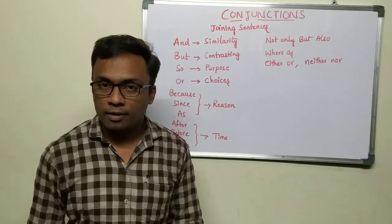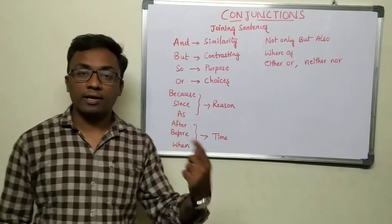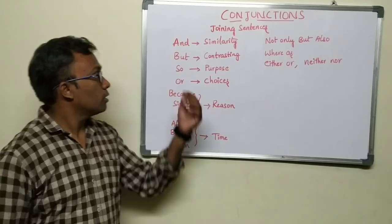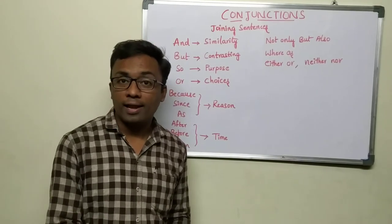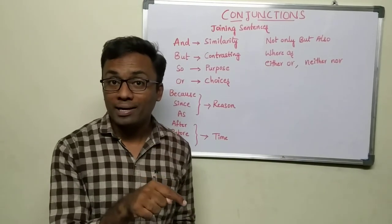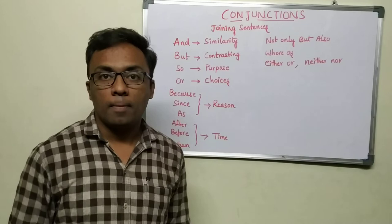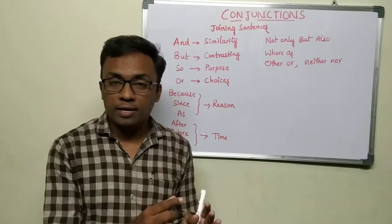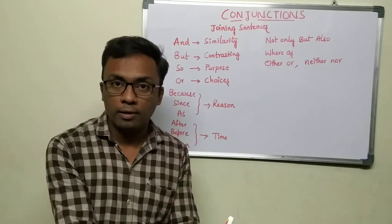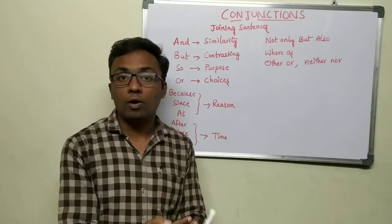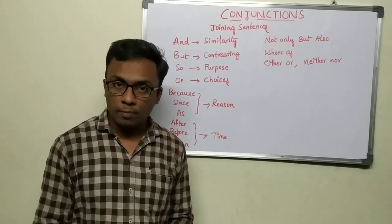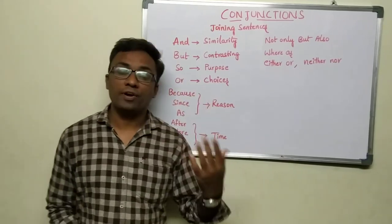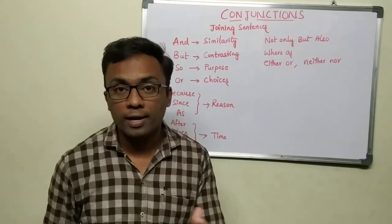'But' is contrasting. 'I like this dress but it is costly' - in one sentence you're making a positive statement, then contrasting why you can't purchase it. Similarly, 'so' is different context - 'so' shows purpose. There are many conjunctions but the aspect changes.